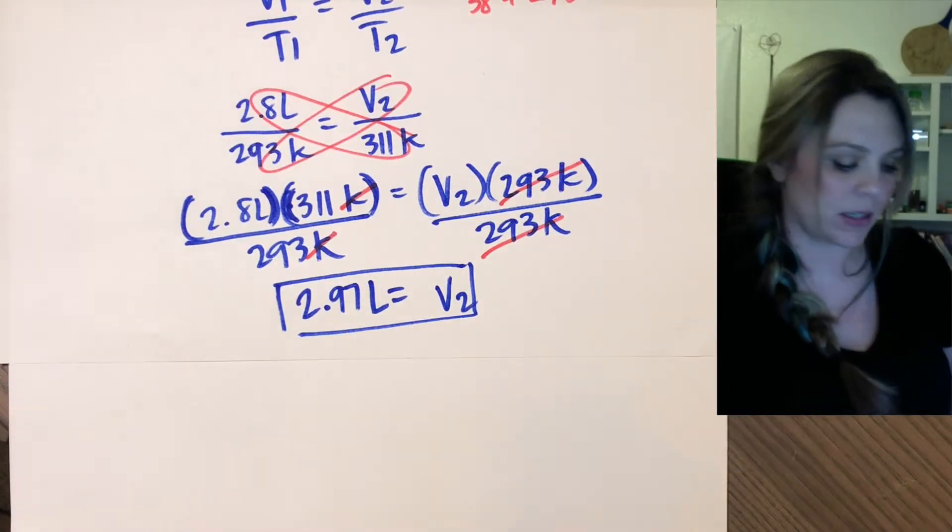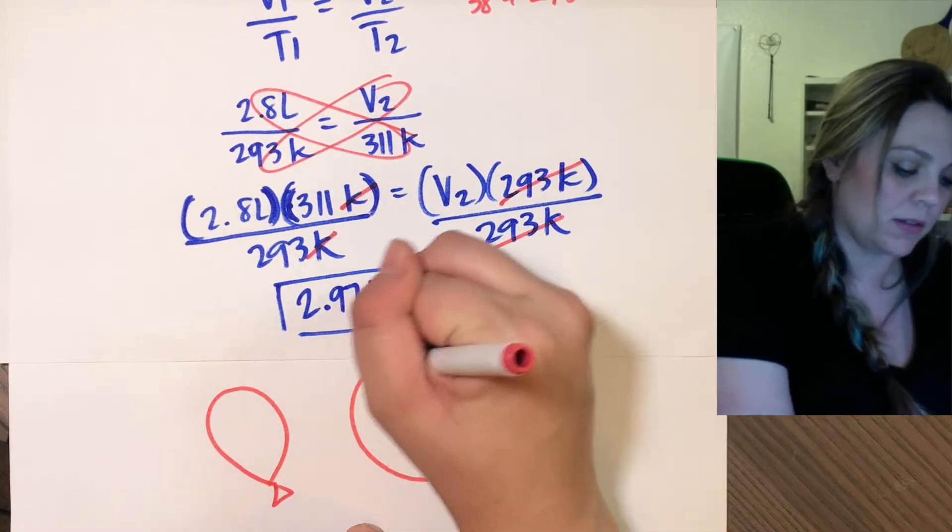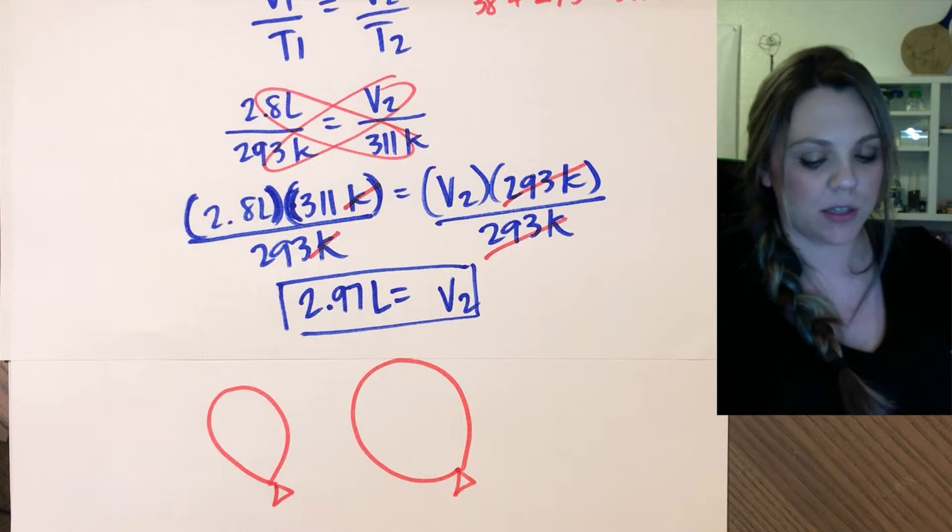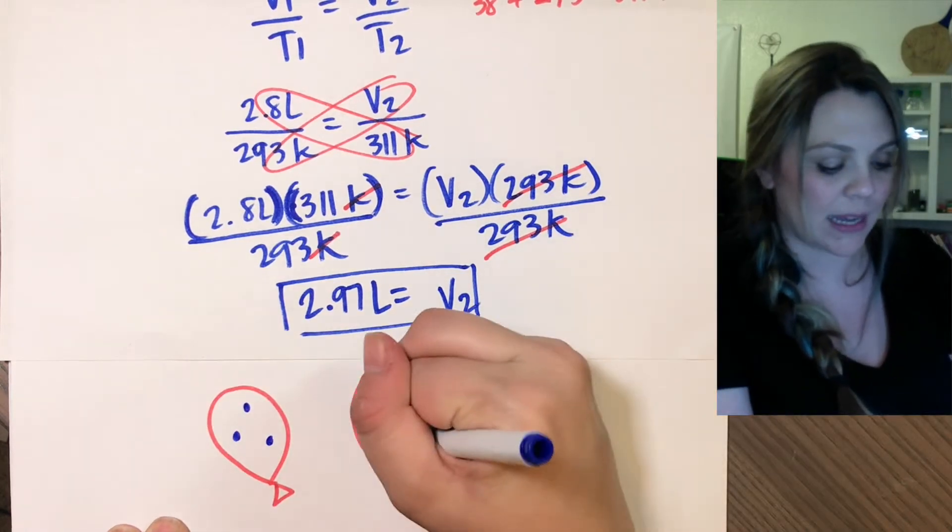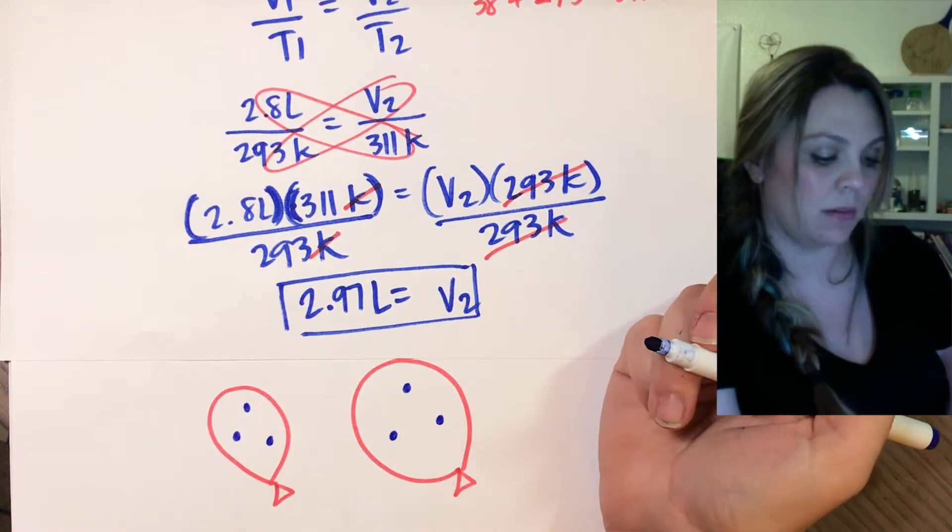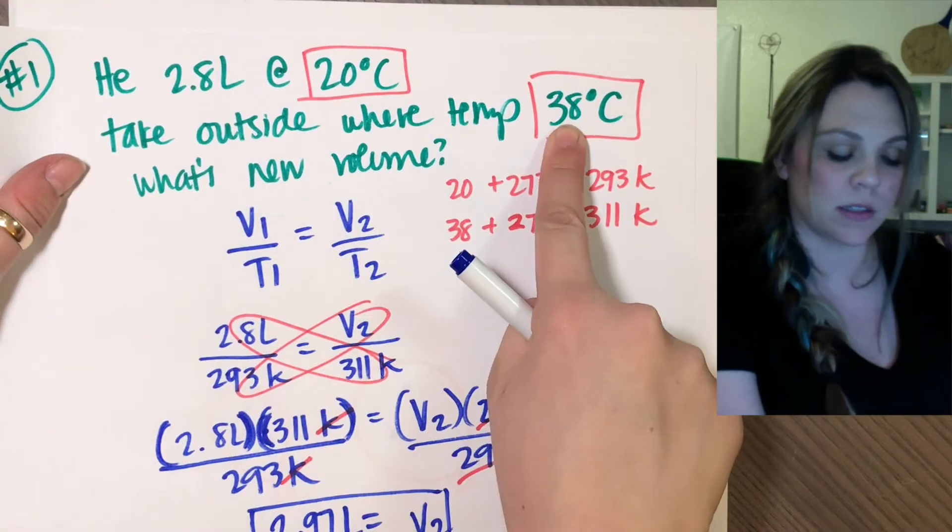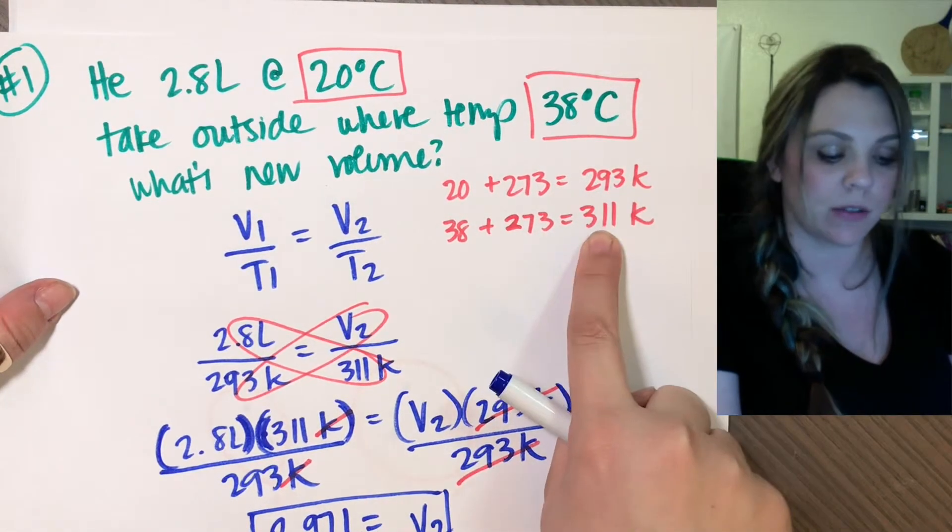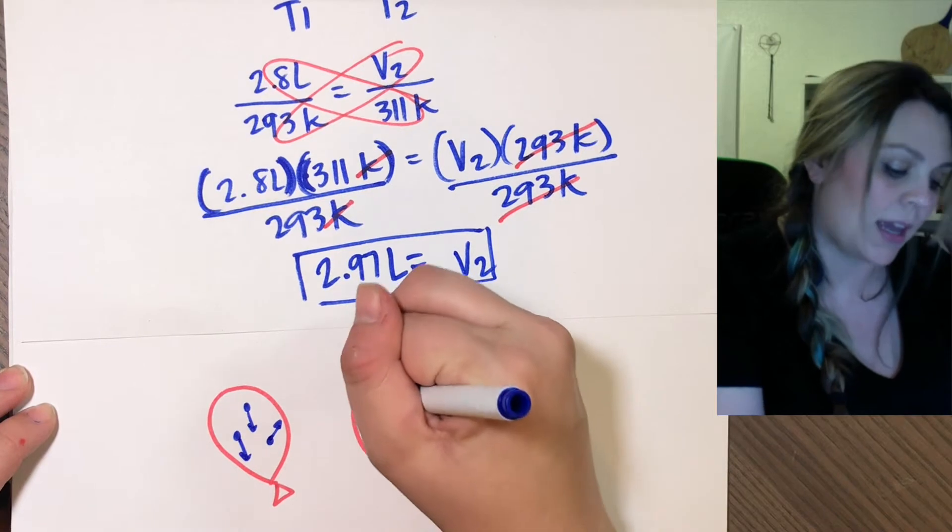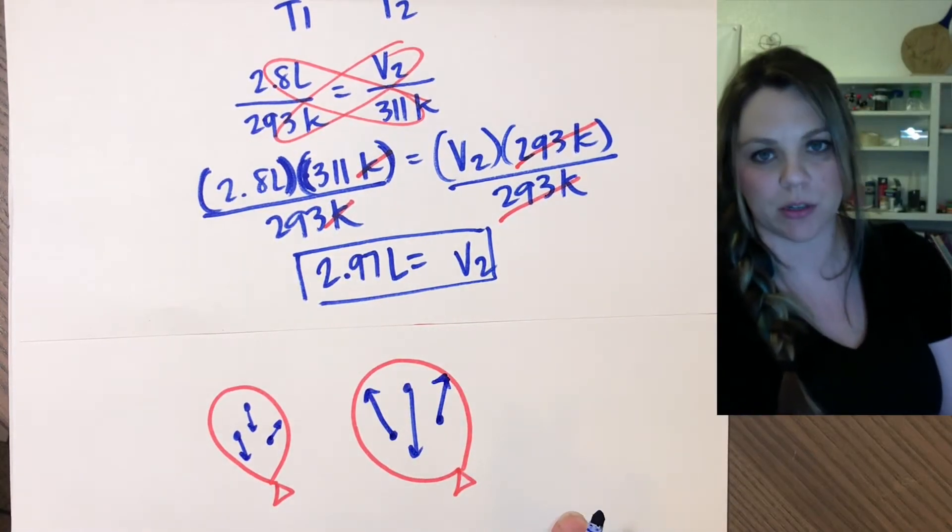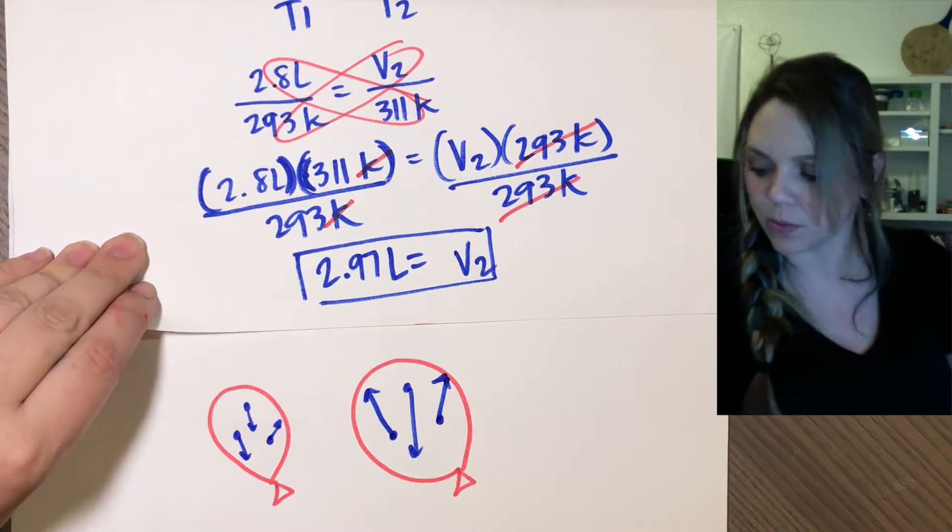If I had to draw my initial and final conditions - my initial balloon versus my final balloon. Initial conditions I didn't change the amount of particles, so if I started with three particles I ended with three particles. My temperature however increased - I went from 20 degrees Celsius to 38 degrees Celsius, I went from 293 kelvin to 311 kelvin. So my arrows should start smaller and they should end larger to show that the temperature has increased. Initial versus final conditions.